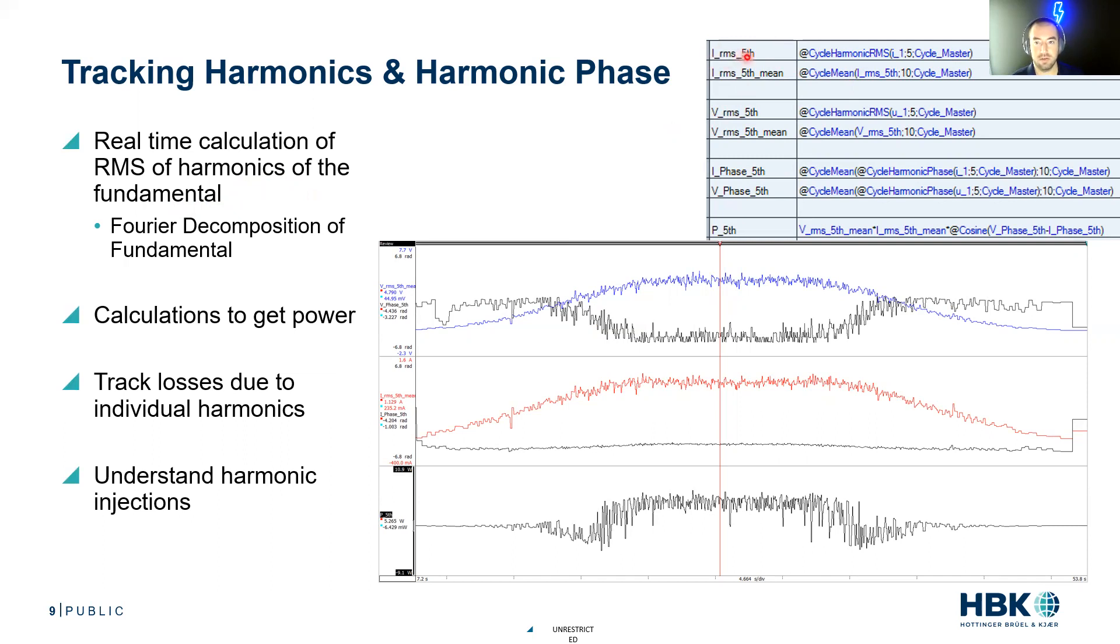We do the real time calculation of the RMS of a harmonic of the fundamental. Basically what I have up here is, I want to look at the current RMS of the fifth harmonic. We have an equation for that, and this gets executed in discrete time. I take the average of it over a period, just to get a sane rational output. So I average over 10 cycles. I take the voltage RMS of my fifth harmonic, I average that over 10 cycles - those are electrical cycles. Then I figure out the phase for both of these, because the harmonics have phase with respect to one another and with respect to the fundamental.